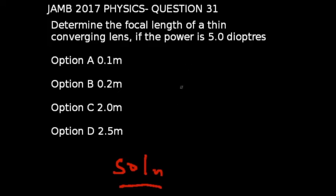We're going to be looking at question 31 of the JAMB 2017 physics exams. Determine the focal length of a thin converging lens if the power is 5.0 diopters.